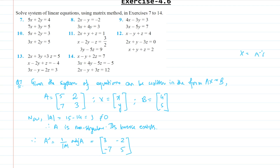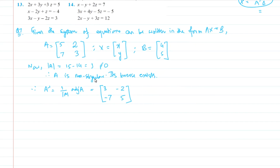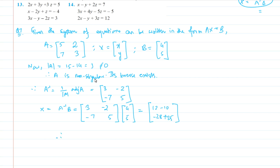Since we have written Ax = B, obviously X = A inverse times B, by pre-multiplying both sides with A inverse. So X = A⁻¹B = [3, -2; -7, 5] times [4; 5], which gives us [12-10; -28+25] = [2; -3]. Therefore x = 2 and y = -3.